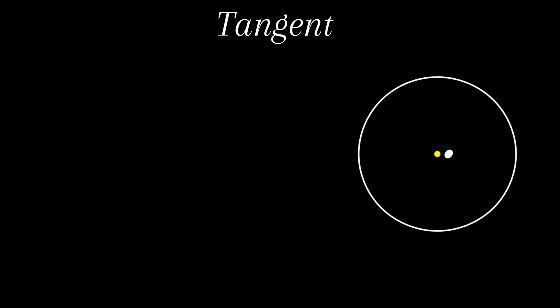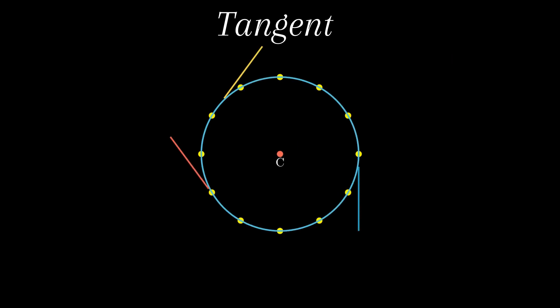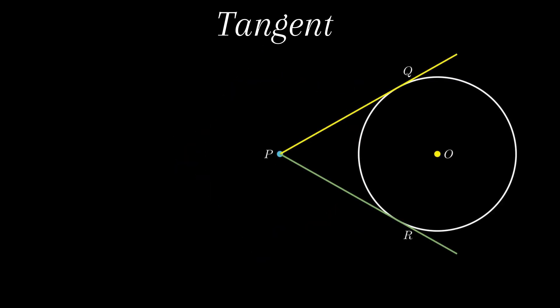However, two tangent lines can be drawn to a circle from a point outside the circle. Since a circle contains infinite distinct points on the circumference, therefore infinite tangents can be drawn to a circle. The point which is common to the tangent and the circle is called the point of contact. The line containing the radius through the point of contact is also called the normal to the circle.